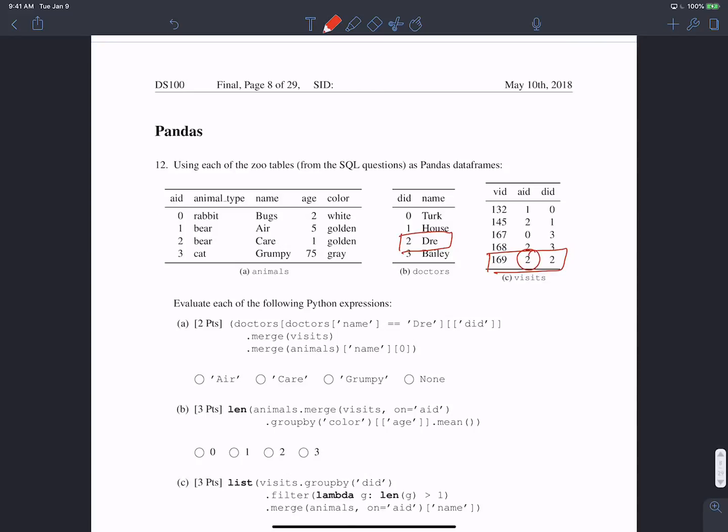Then we're going to merge that with animals. Notice here the animal ID is two, so we're going to merge this with the corresponding row in animals. We want the name of this animal, and it turns out there's only one resulting row after this double merge, which will correspond to care the bear, so its name is care.